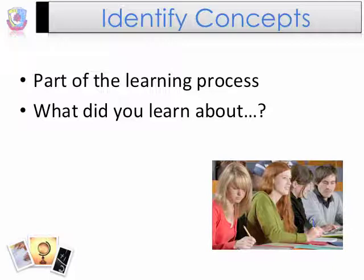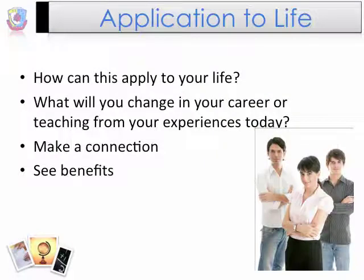Step 4: Identify concepts — this cannot be left out or the learning will be incomplete. The learners must identify what they have learned. Try not to tell them what they should have found, because adults all learn differently and they enjoy discovering on their own. It's okay to ask specific questions, such as, 'What did you learn about behavior management?' Step 5: Application to life is the final and most important step. Learners need to think about how to apply their learning to their life, writing and responding to what they will do with the training. Learners need to see the connection between their life and their learning, which allows them to see benefits from the training and feel their time is appreciated.